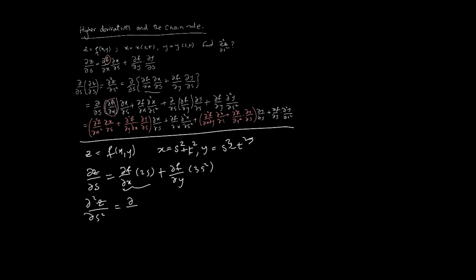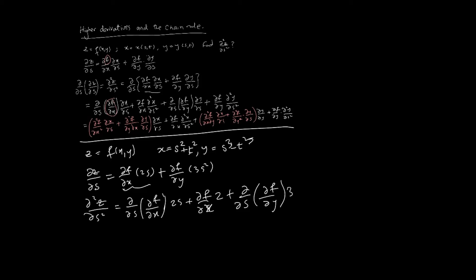For this example, xs = 2s and ys = 3s², so ∂z/∂s = fx · 2s + fy · 3s². Now as we go to the second derivative ∂²z/∂s², this will be treated as a product: (∂/∂s of fx) times 2s, plus fx times the derivative of 2s which is 2, plus (∂/∂s of fy) times 3s², plus fy times 6s.